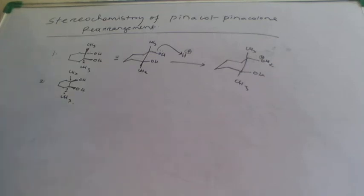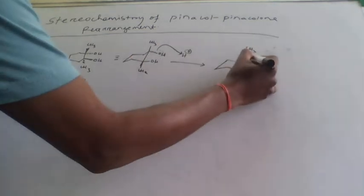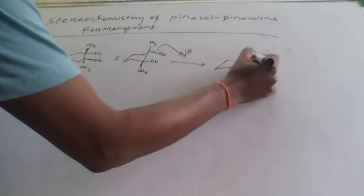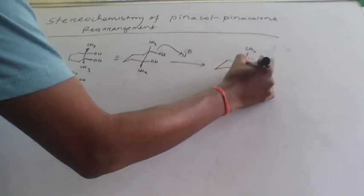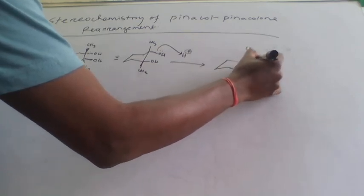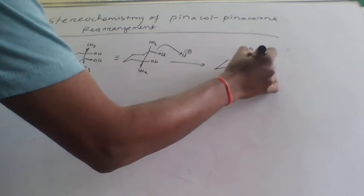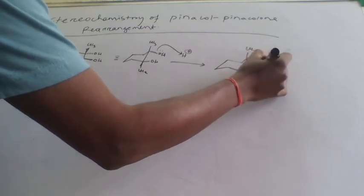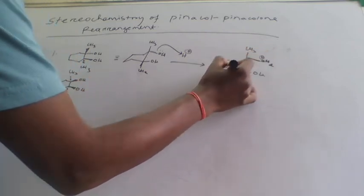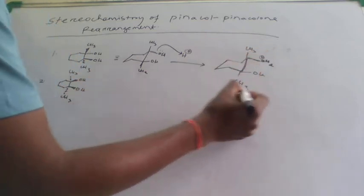Here you have to remember that the anti-periplanar bond will take part in the rearrangement. This is your leaving group, and the bond that is anti-periplanar to this leaving group is the bond that will migrate.